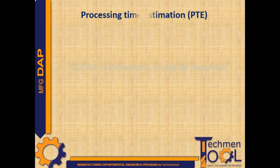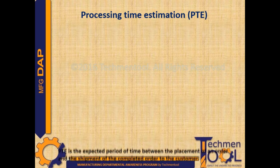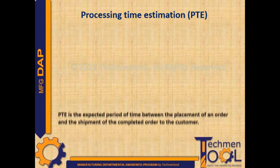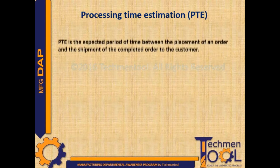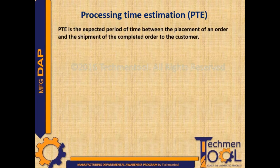Processing time estimation is the part of feasibility study activity. This gives information about how much time the system will take to process the job. It is the expected period of time between the placement of an order and shipment of the completed order to the customer.